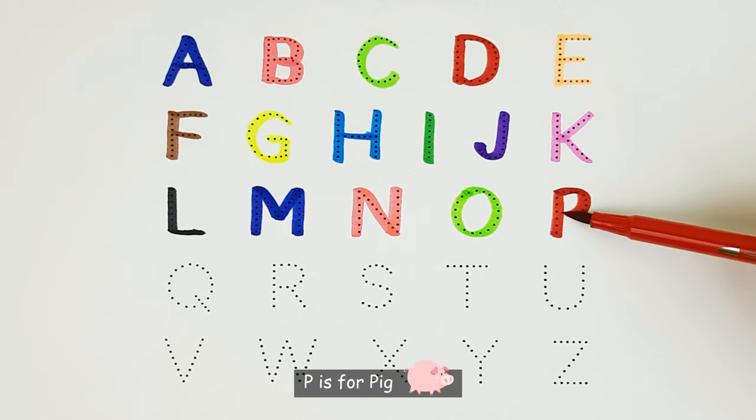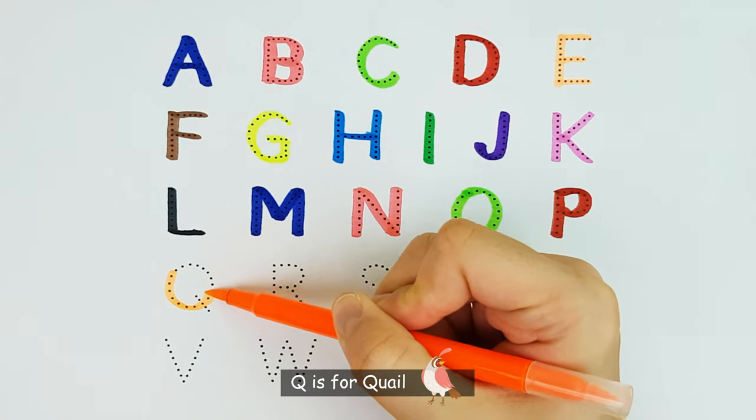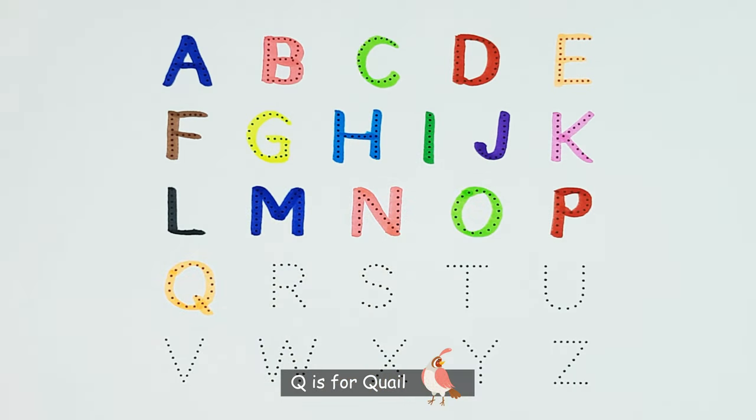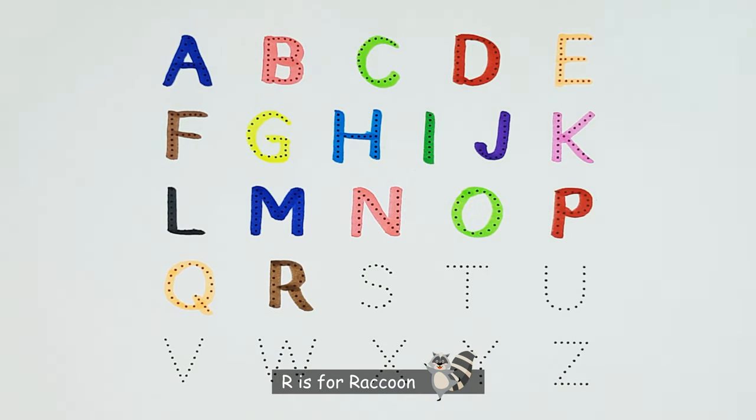P. P is for Pig. P. Q. Q is for Quail. Q. R. R is for Raccoon. R.